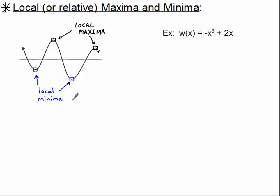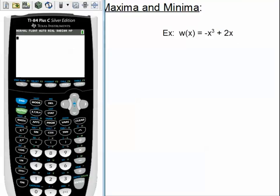So obviously, if I give you a graph that's on graph paper, you'll be able to just count out the ordered pair and give them to me. If I give them to you as an equation, I need you to be able to speak to the calculator to be able to do that. So let's please get our calculator. If you do not have your calculator, why don't you pause until you go and get it. And we're going to find the local maxima and minima for this function.